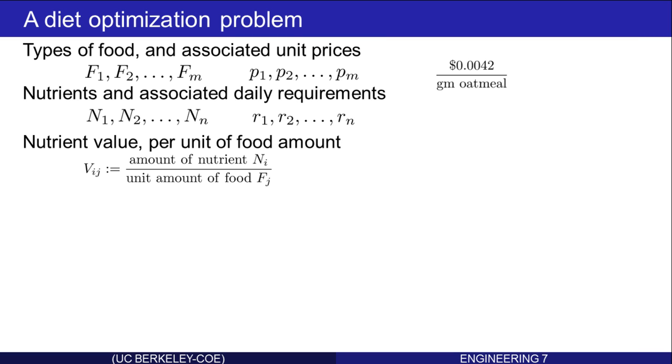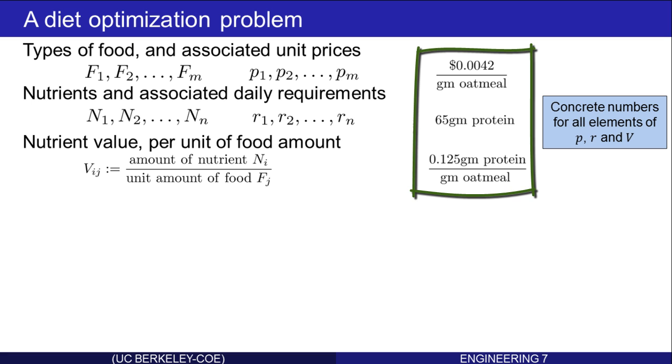The daily requirements for protein might be 65 grams. And one gram of oatmeal provides one-eighth of a gram of protein. So there's concrete numbers for all the elements of P, R, and V.